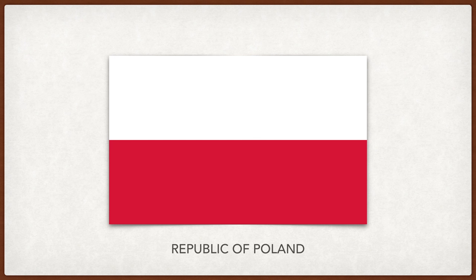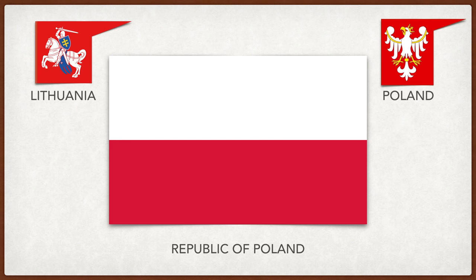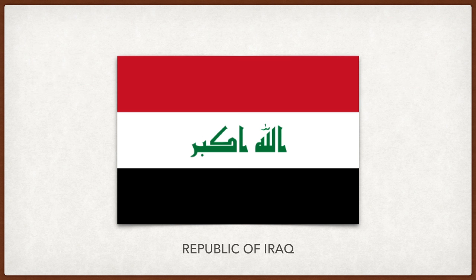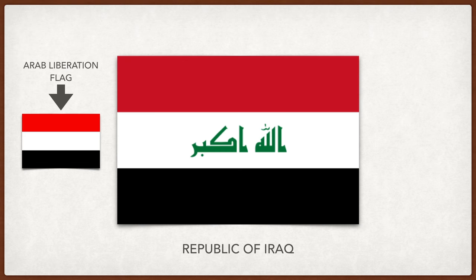Poland. The colors come from the coat of arms of the Polish-Lithuanian Commonwealth, when the national colors were needed to distinguish military personnel. White from the white eagle of Poland and the white knight of Lithuania, and red from the shields. Iraq. The red, white, and black are from the Arab liberation flag. The green in the middle represents Islam with the words 'God is great' in Arabic.